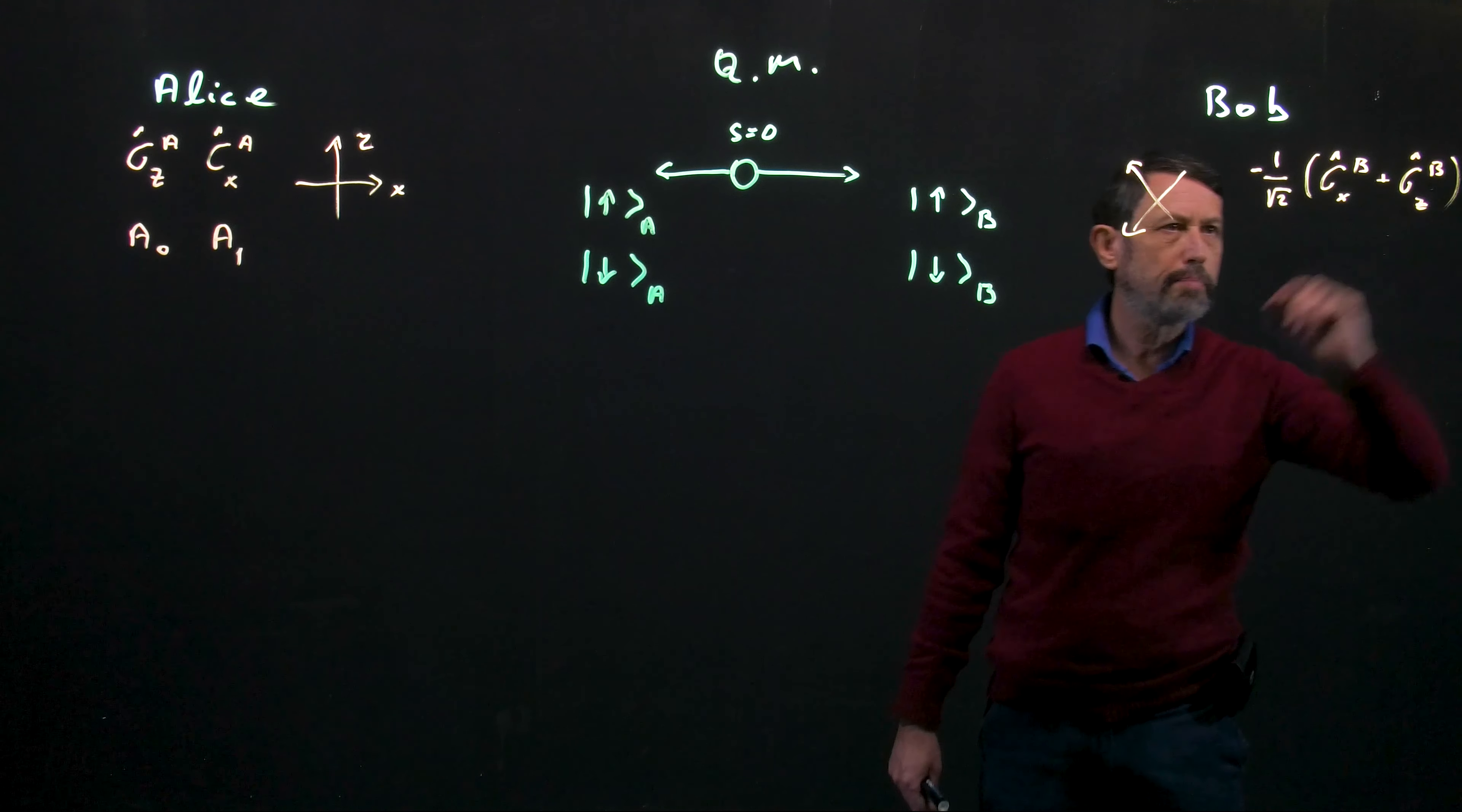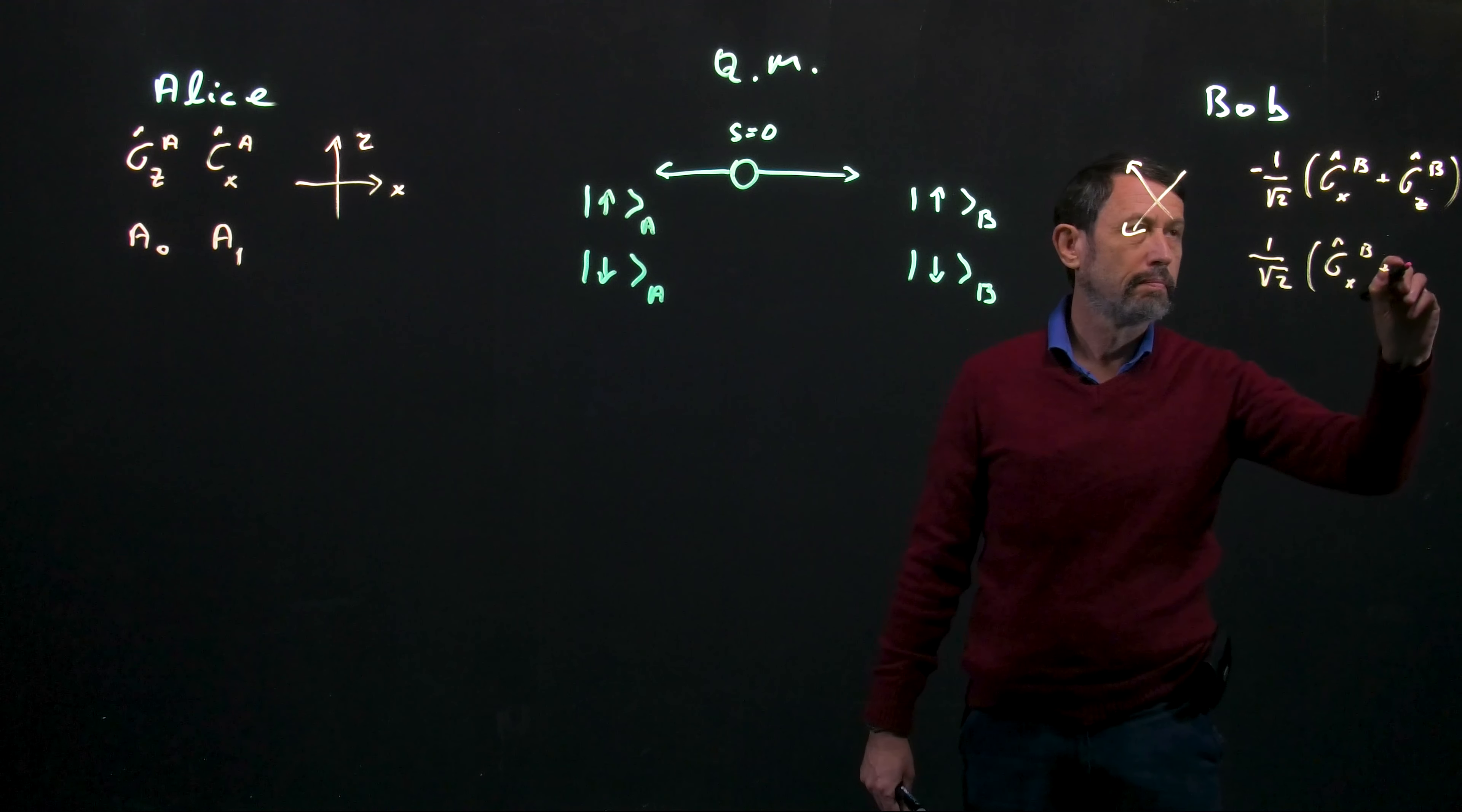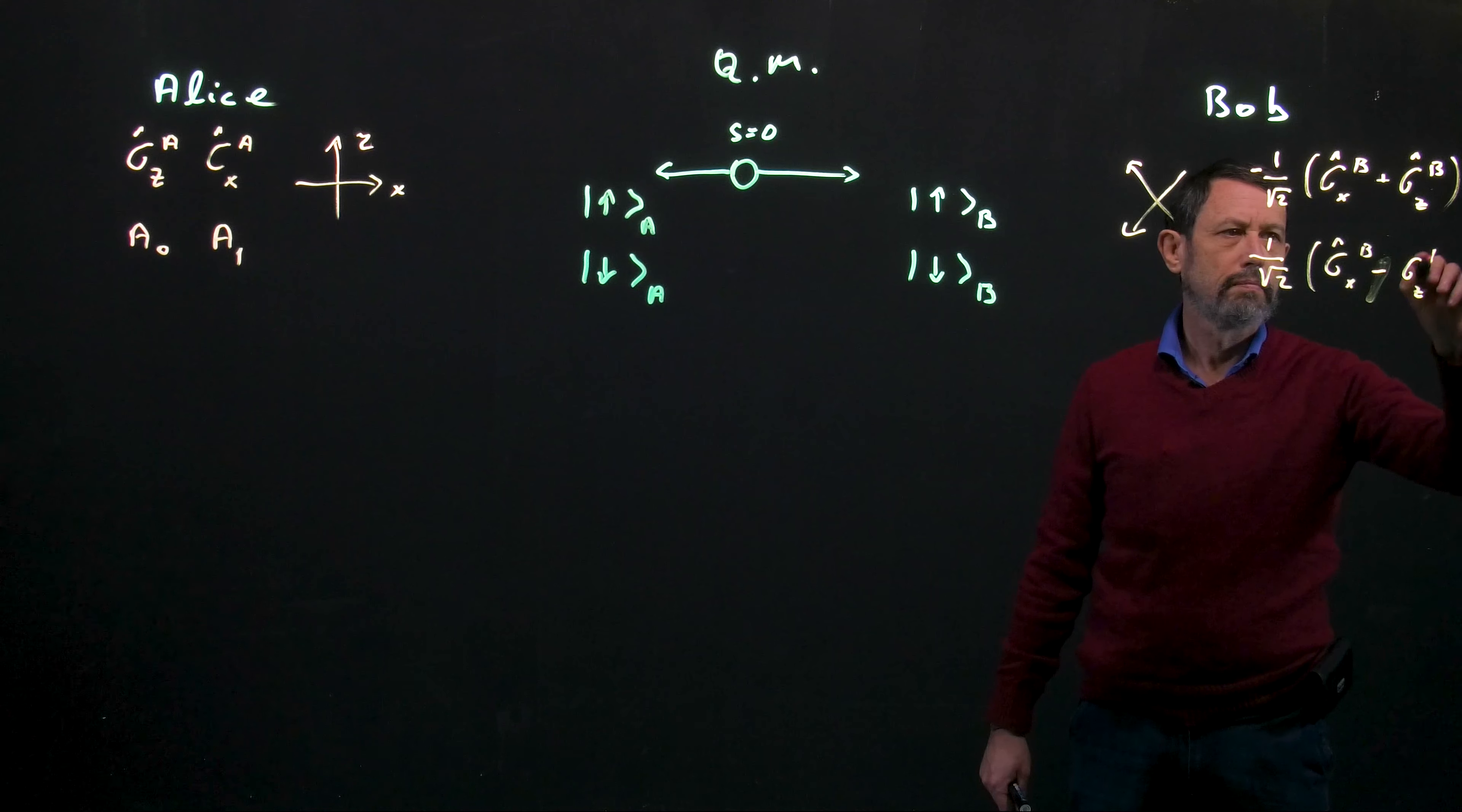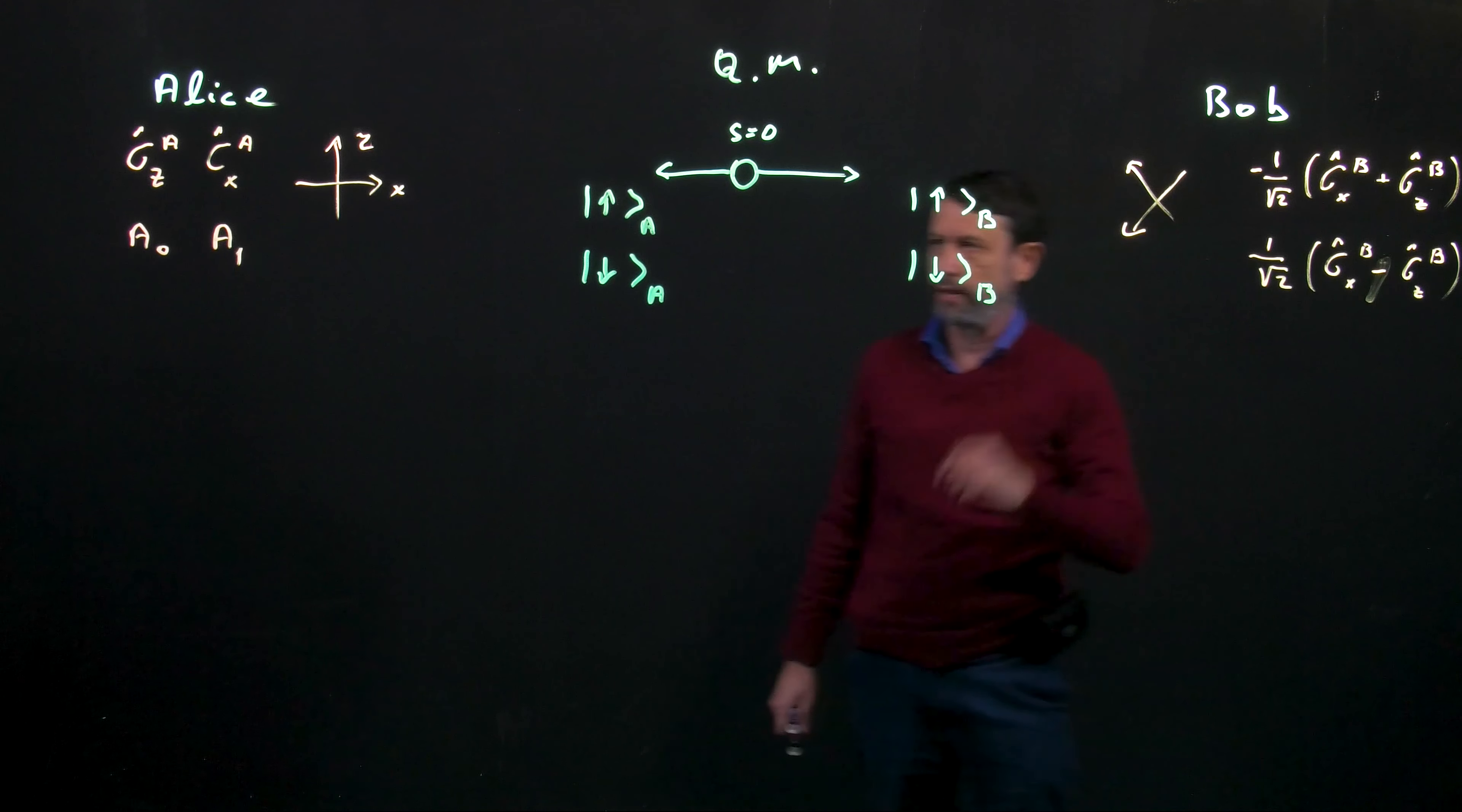And we denote it with b because that's the measurement that Bob performs.